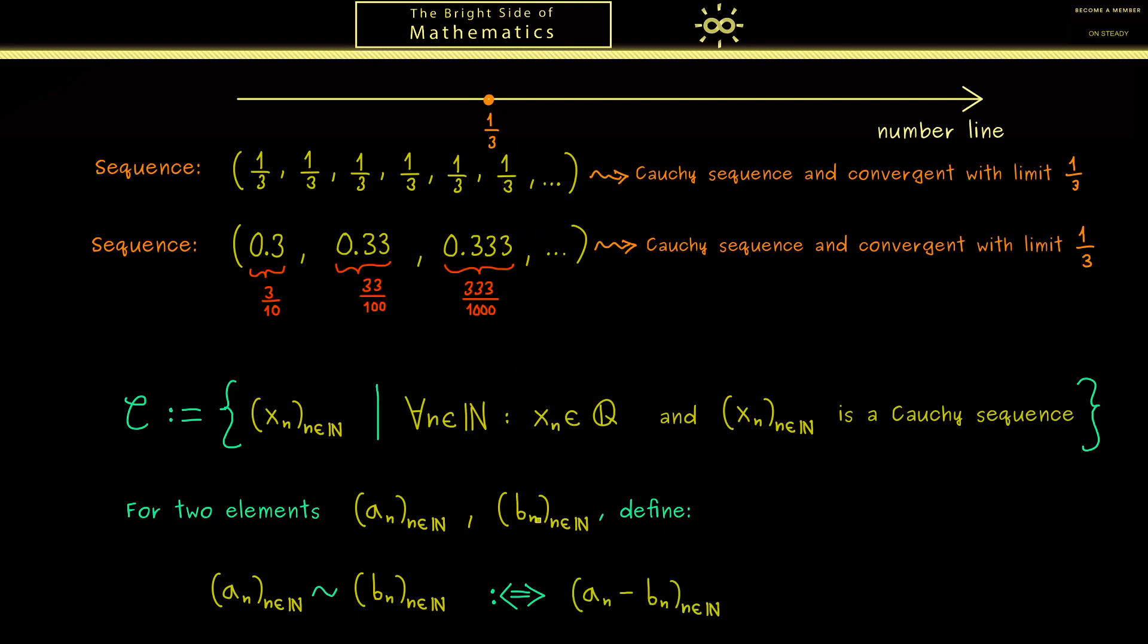Therefore, the difference between two members from the two sequences gets smaller and smaller. Hence, this difference is the new sequence we should consider. And now we already discussed that it should be a convergent sequence with limit 0. In other words, for any point on the number line, we just shift the problem to 0.